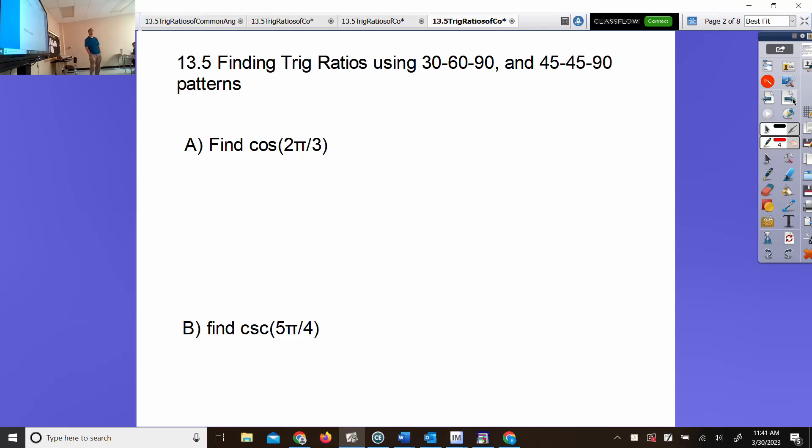Find trig ratios using 30-60-90 and 45-45-90 patterns. First example is finding cosine of 2π/3. What are you going to do with 2π/3? Grace says make it a degree. How do you make a pi rad into a degree? 180 over π because you want the π's to cancel. You can type it in a TI-84 if you can't do it in your head.